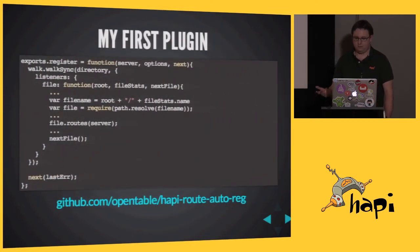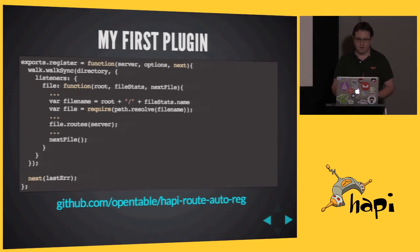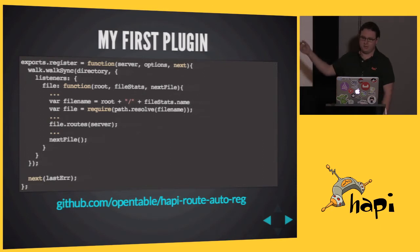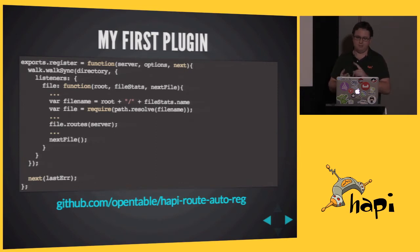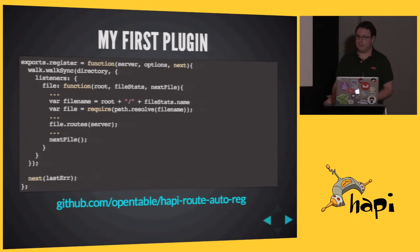The first plugin I wrote was pretty simple. All it does is you point it at a directory. It walks the directory and says: is there something in there that looks like a routes file? If so, call server.route on it. Basically, it was to get rid of the boilerplate of calling server.route everywhere. The main parts of this plugin — the register function, which takes the server, options, and next callback. The key bit there is the server object — it's exactly the same server object that you get when you do new Hapi.server, which means anything you're doing in your application code, you can wrap it in a plugin. And that's really, really powerful. Frankly, it beats the hell out of app.use.